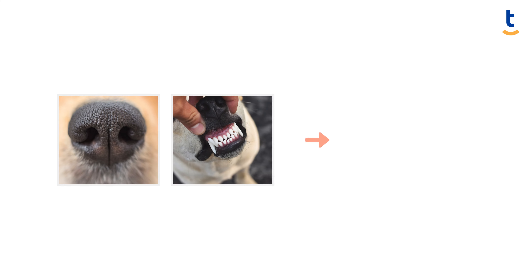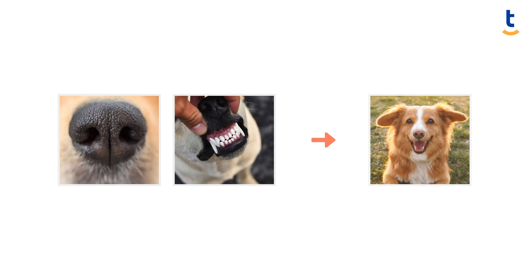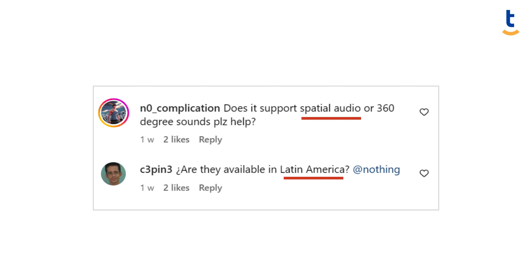Some examples of processed data are specific properties of dogs measured from their pictures and keywords extracted from user comments. Processed data are structured, organized, and primed for analysis.